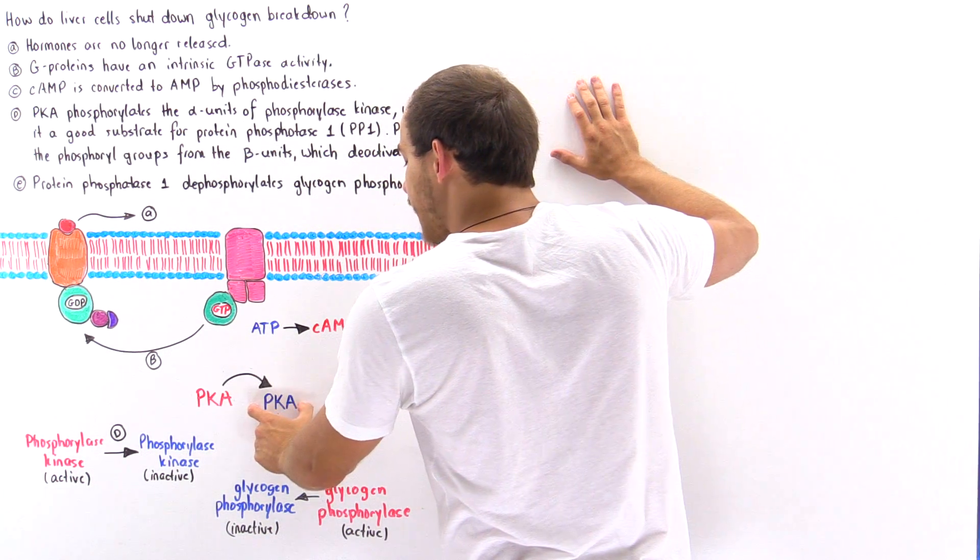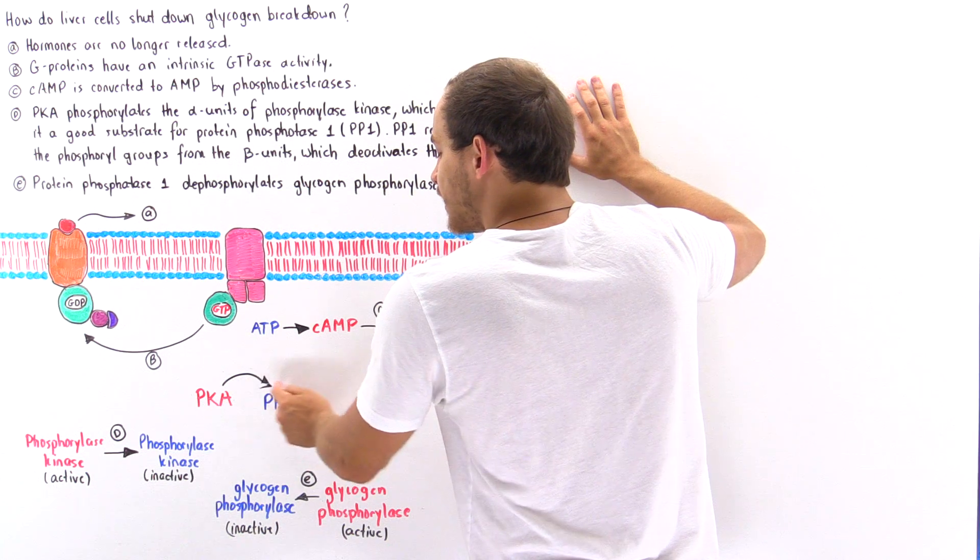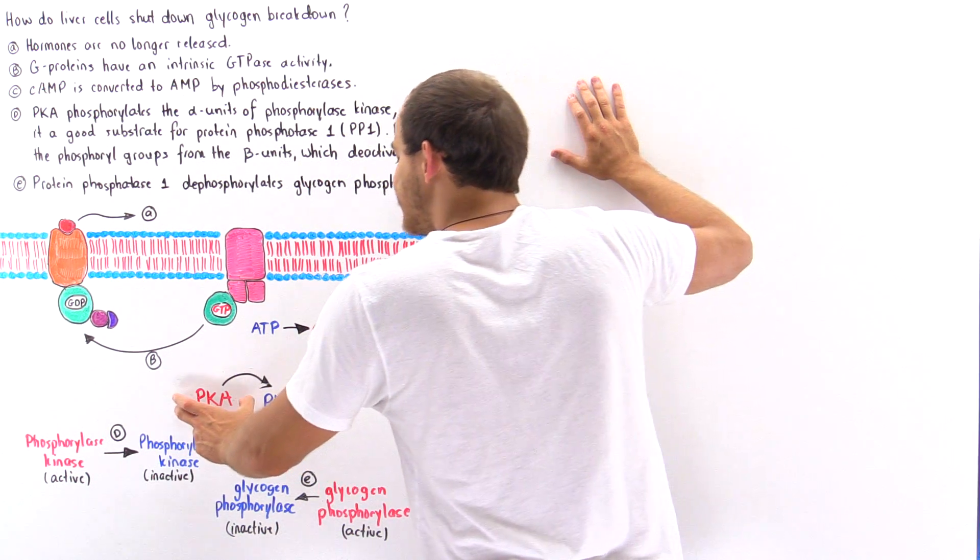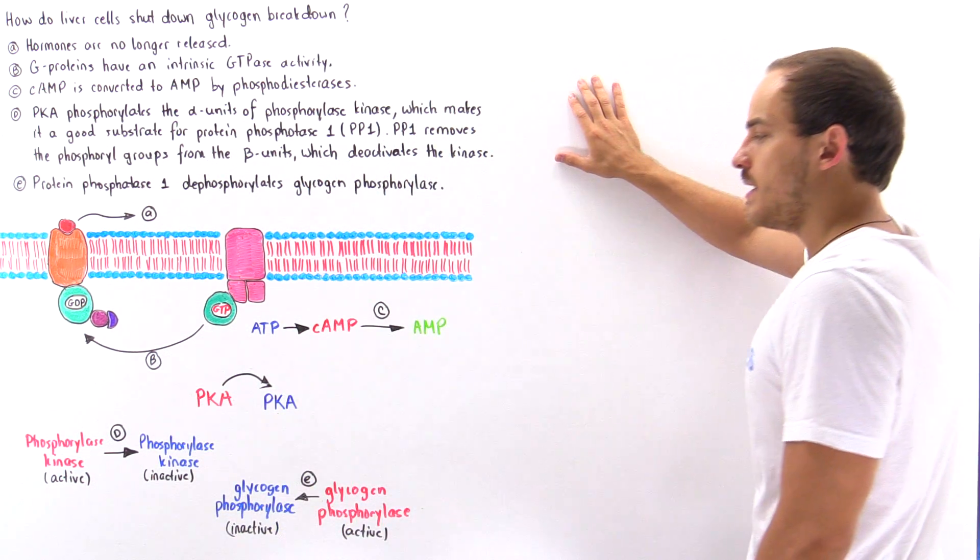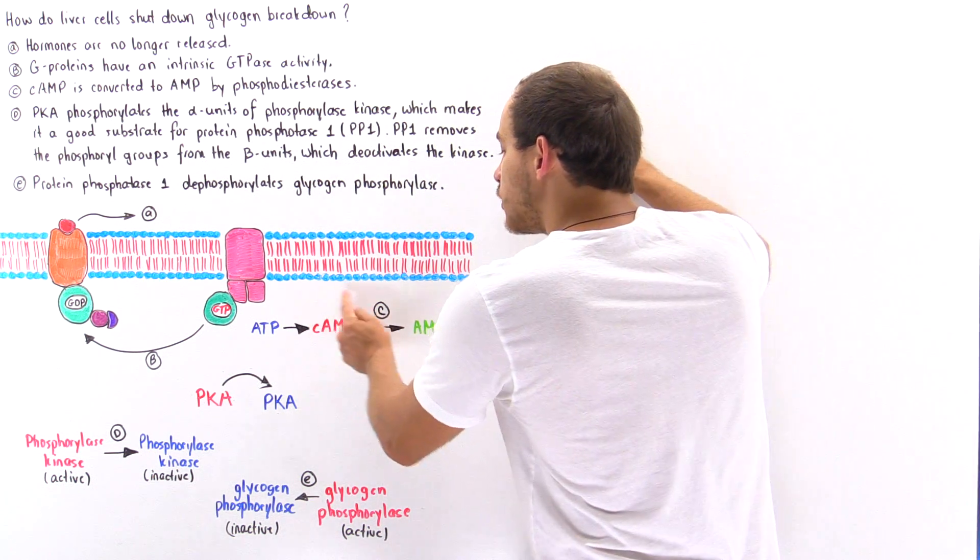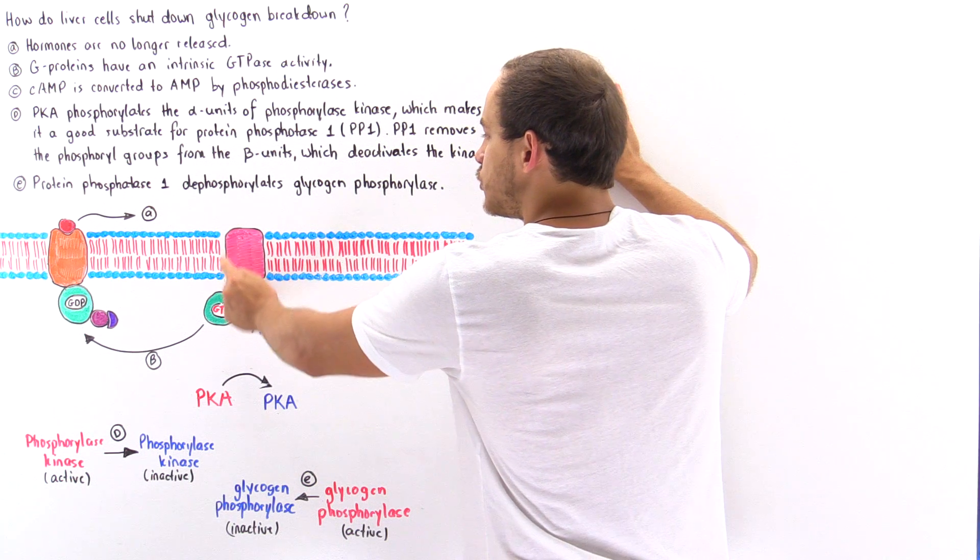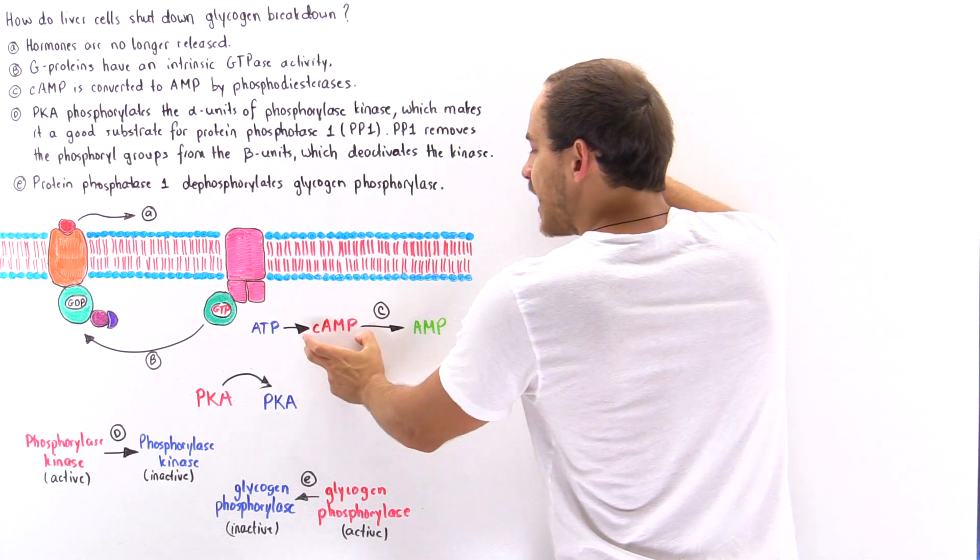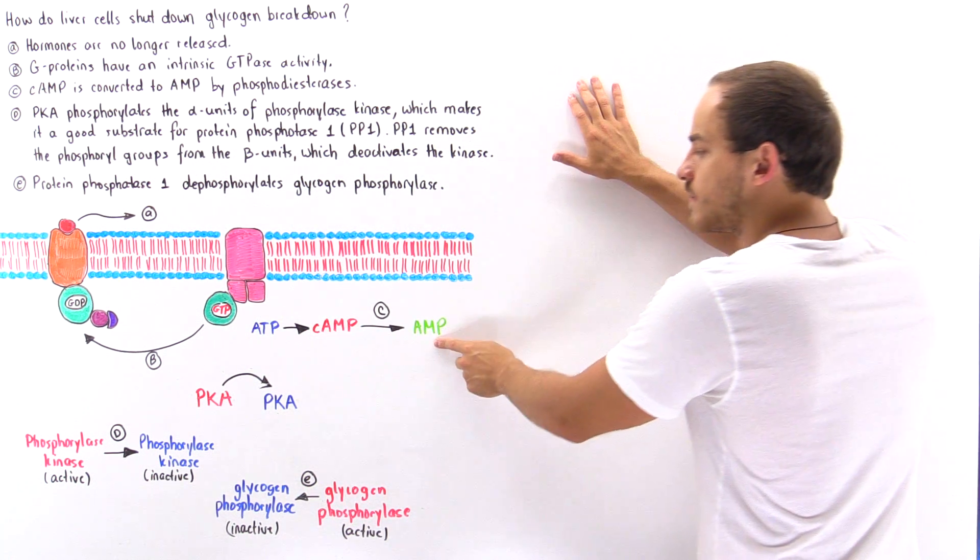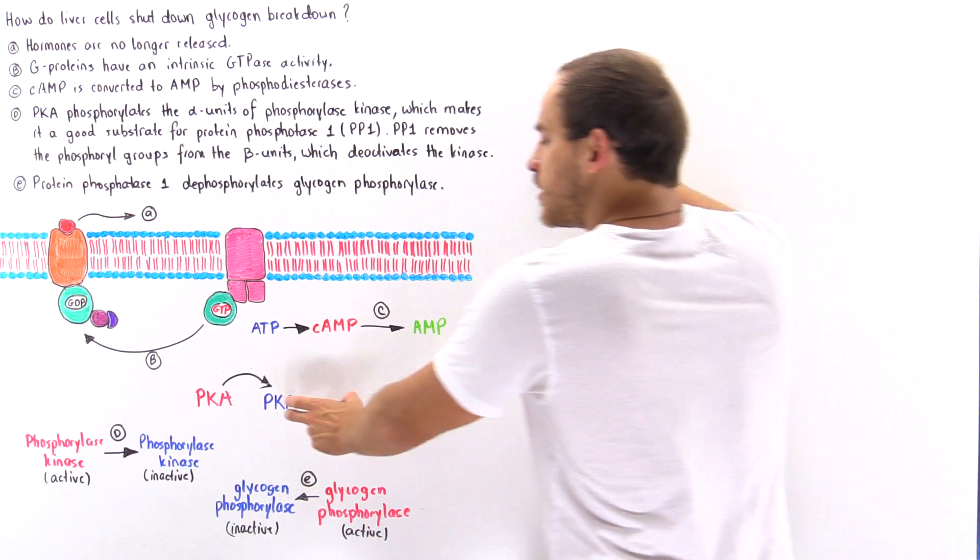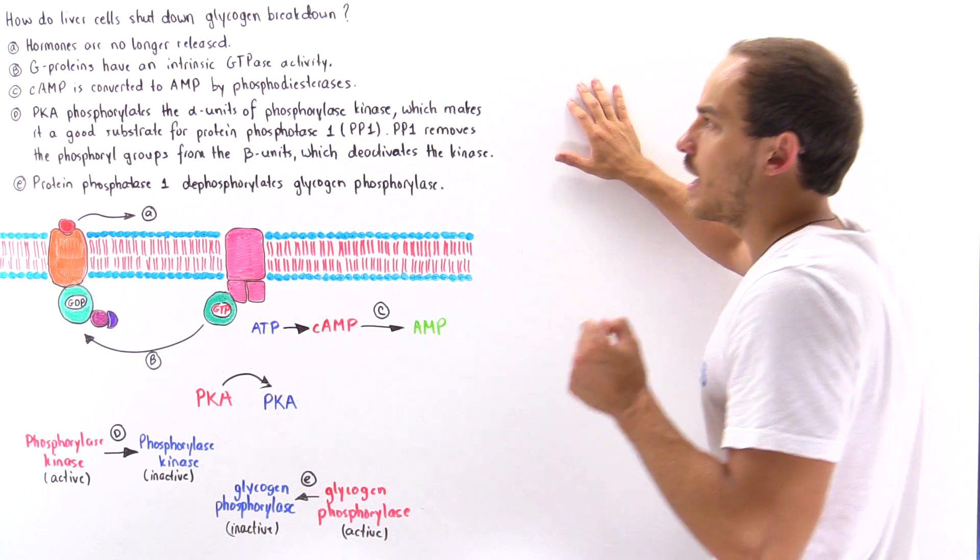cAMP is used to activate the inactive protein kinase A, PKA, into the active version of PKA. But now that we are no longer producing cyclic AMP as a result of the inactivation of the adenylate cyclase, and because the cAMP is being transformed into AMP, the PKA is no longer activated.